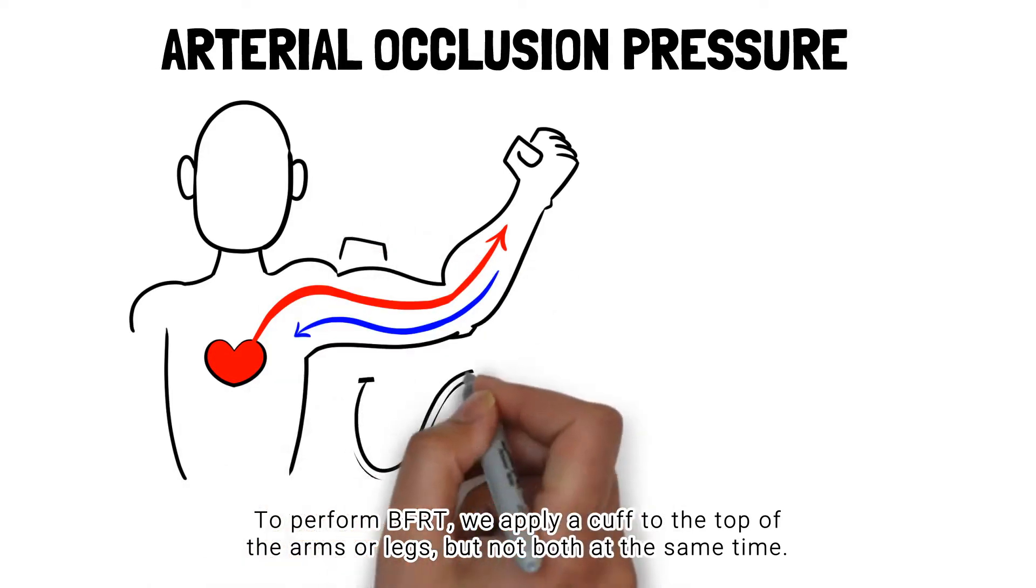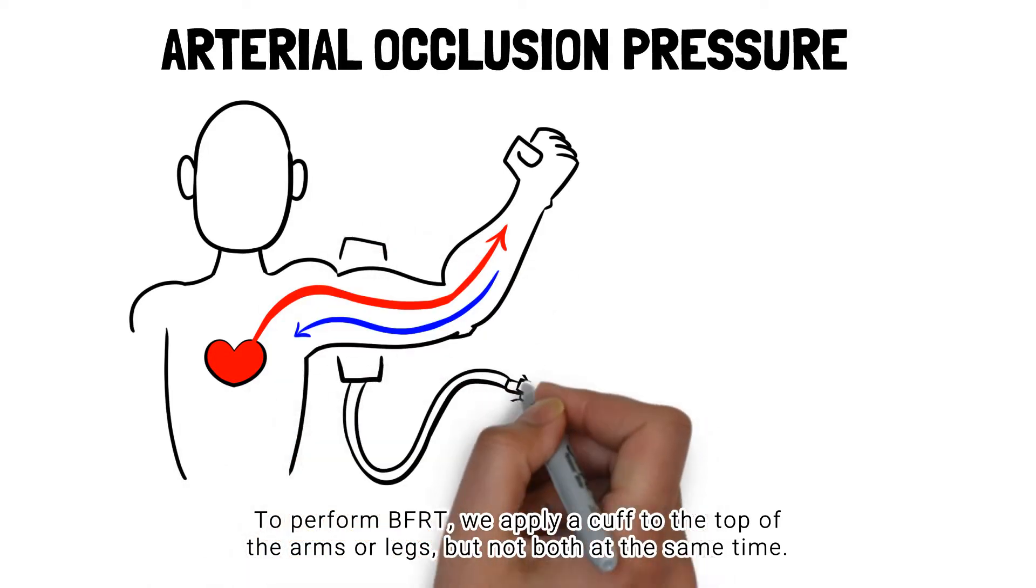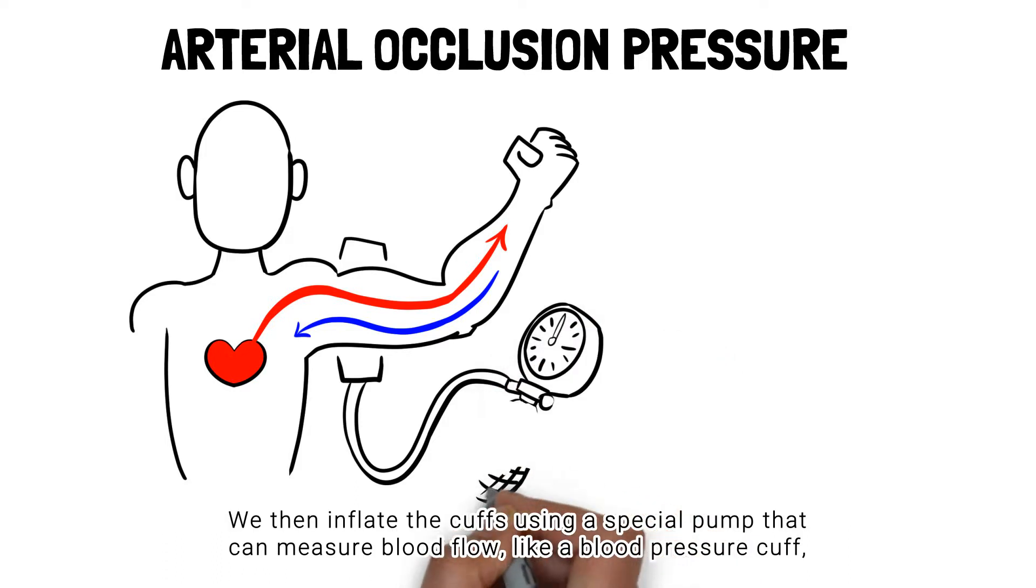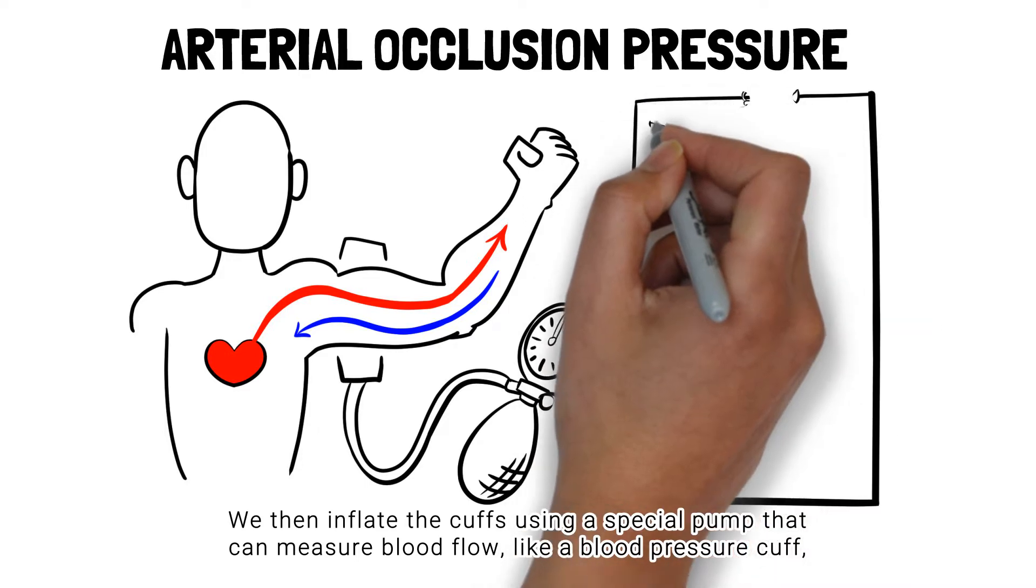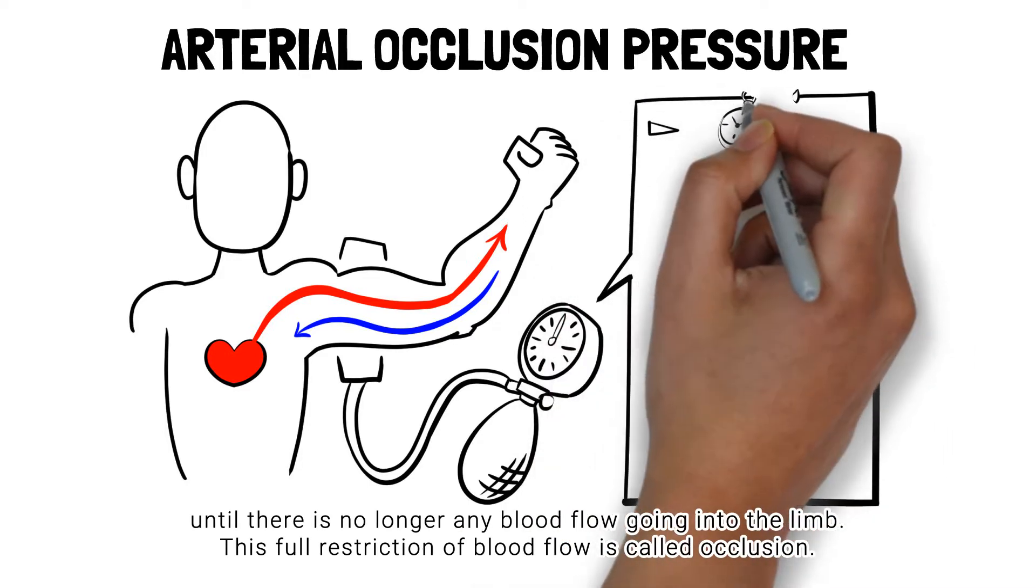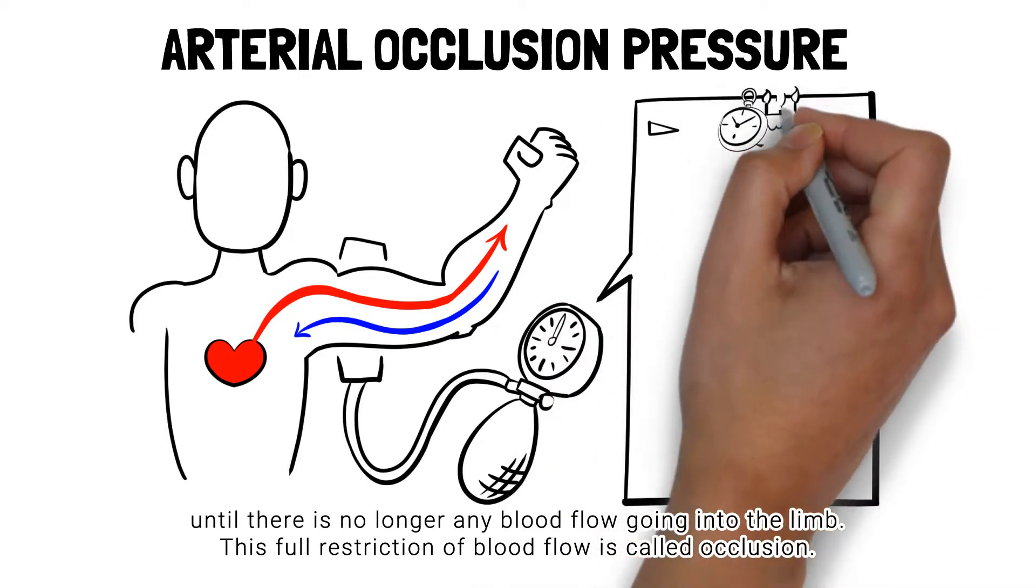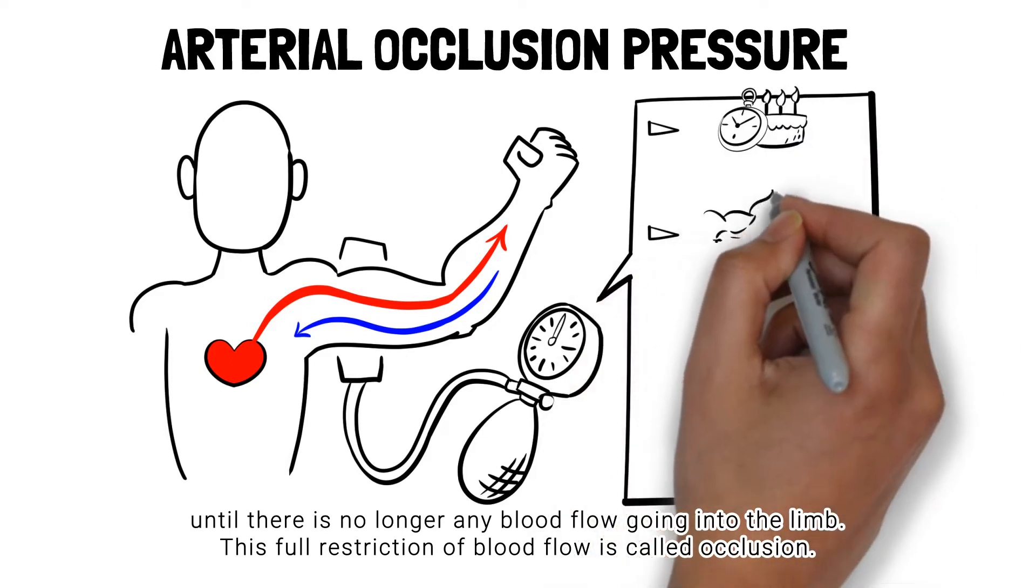To perform BFRT, we apply a cuff to the top of the arms or legs, but not both at the same time. We then inflate the cuffs using a special pump that can measure blood flow, like a blood pressure cuff, until there is no longer any blood flow going into the limb. This full restriction of blood flow is called occlusion.